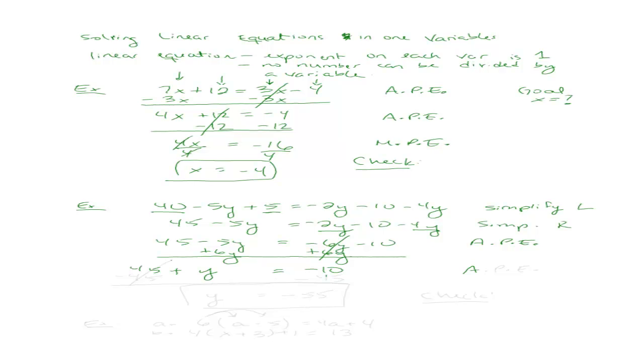Let me use the addition property of equality again to isolate that y. So I'm going to subtract 45 from both sides now. When I do that, my 45's cancel out. And I'm left with y equals negative 55. That's it right there. So I didn't even need to use the multiplication property of equality this time. And again, I'll leave the check up to you.